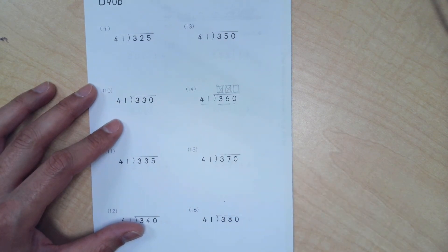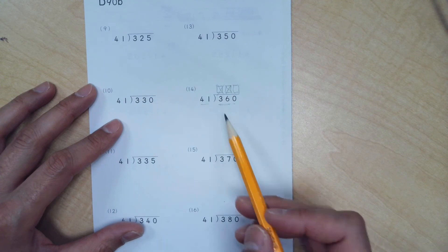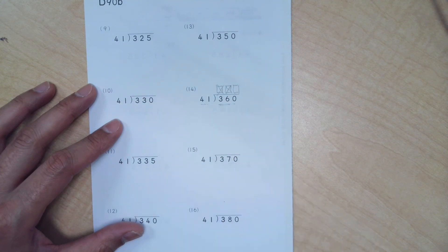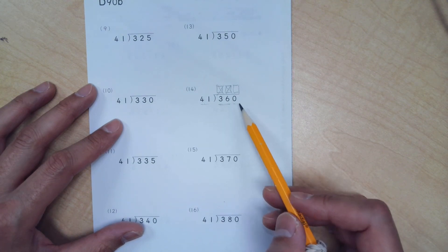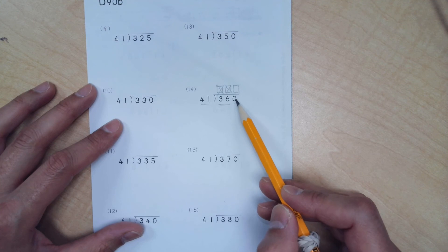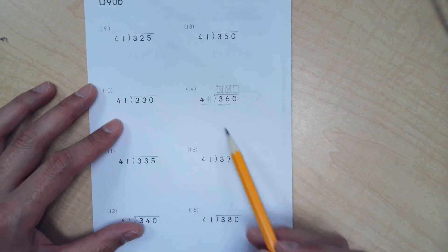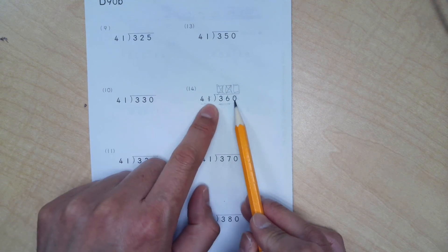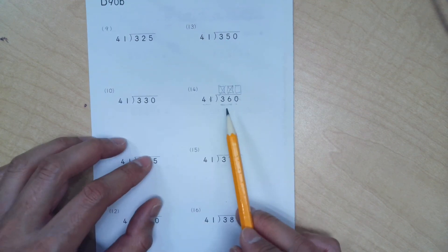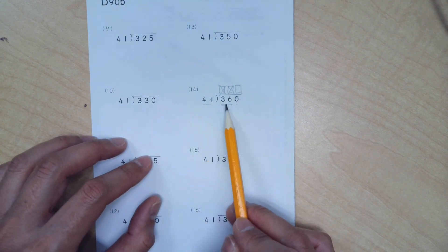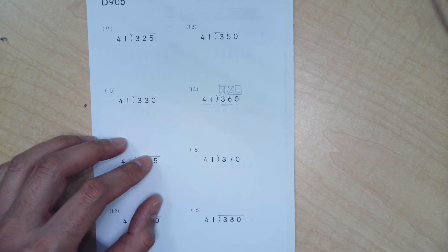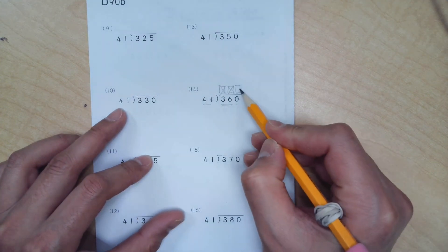But the more important question is, how many times can 41 go into 360? So we're going to do the exact same thing. We're going to estimate. Let's estimate by removing imaginary. In our imagination, let's remove that this 0 does not exist. And this 1 does not exist. So we're going to take one number from each side. And ask ourselves, how many times can 4 go into 36? We know that 4 times 9 is 36. So let's see what happens if we put a 9 there.